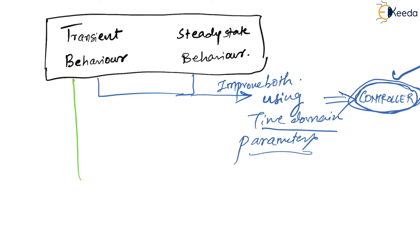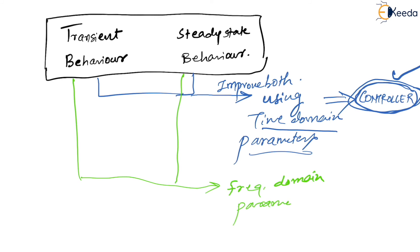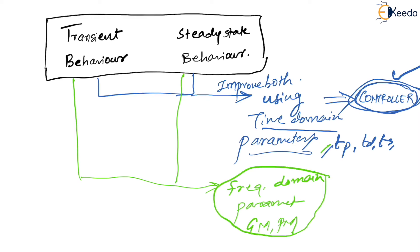Similarly, if I want to improve both transient behavior and steady state behavior by using frequency domain parameters — such as GM, PM, etc. — then we call it a compensator. So the key distinction is: use time domain parameters to improve the system → controller; use frequency domain parameters → compensator.